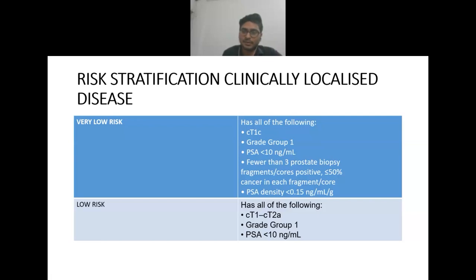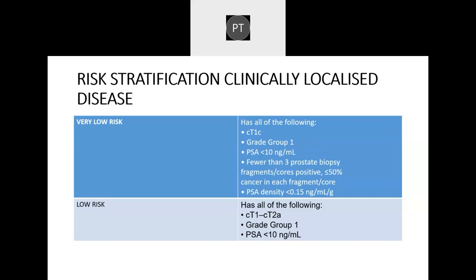Grade group is a new classification: if grade group is 1, the Gleason score is 6; if grade group is 2, it is Gleason 3+4=7; if grade group is 3, it is Gleason 4+3=7; if grade group is 4, it is Gleason 4+4=8; and if grade group is 5, it is Gleason 9 or 10.